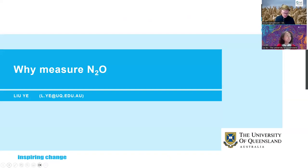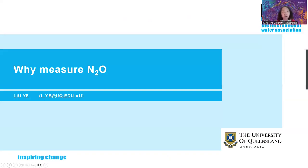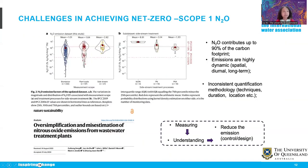Thanks, Oscar. I will give a very short overview about why we need to measure nitrous oxide. We all know nitrous oxide is a very important greenhouse gas. As scope 2 emissions from the electricity grid become more and more renewable, process emissions become dominant. With process emissions, nitrous oxide normally accounts for up to 90% of the carbon footprint. The emissions are also very highly dynamic — spatial, diurnal, and long-term.